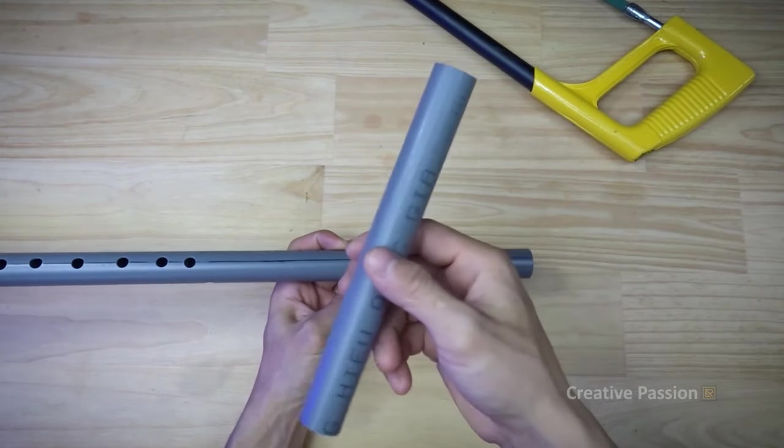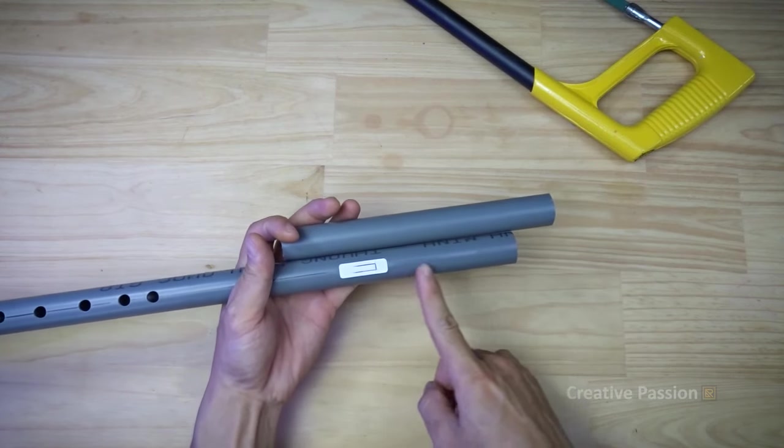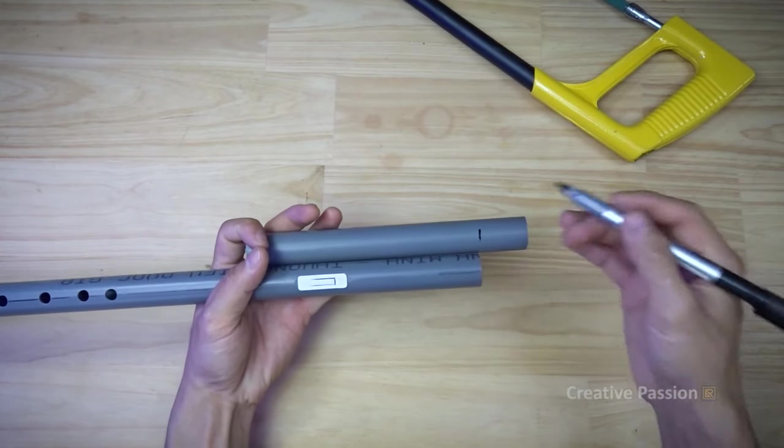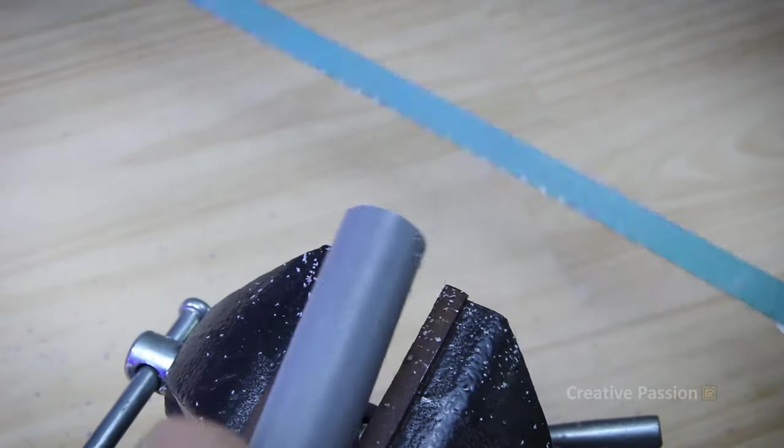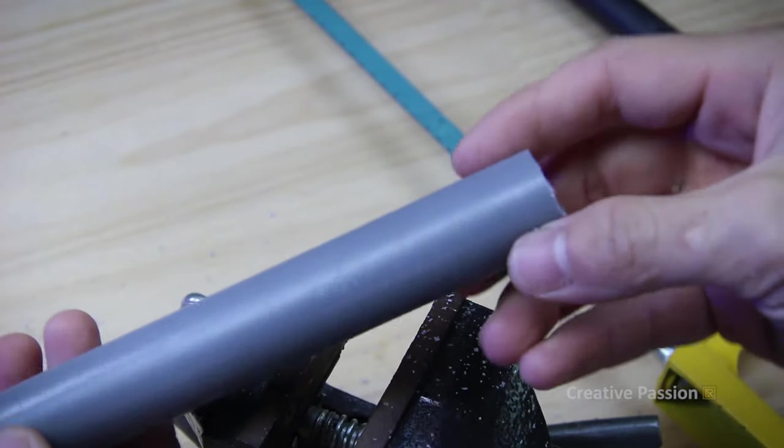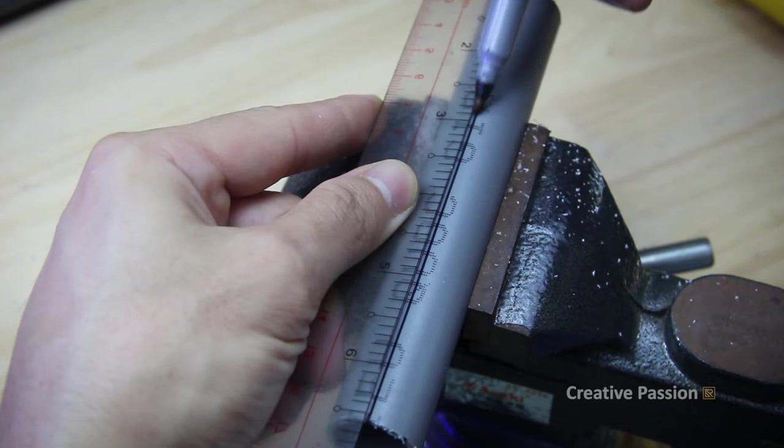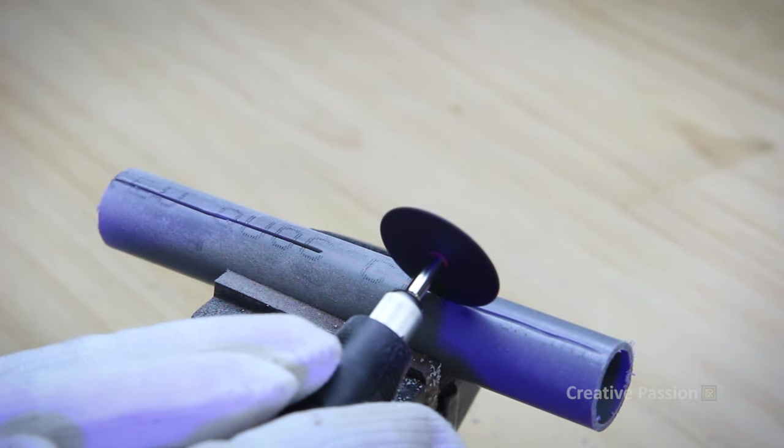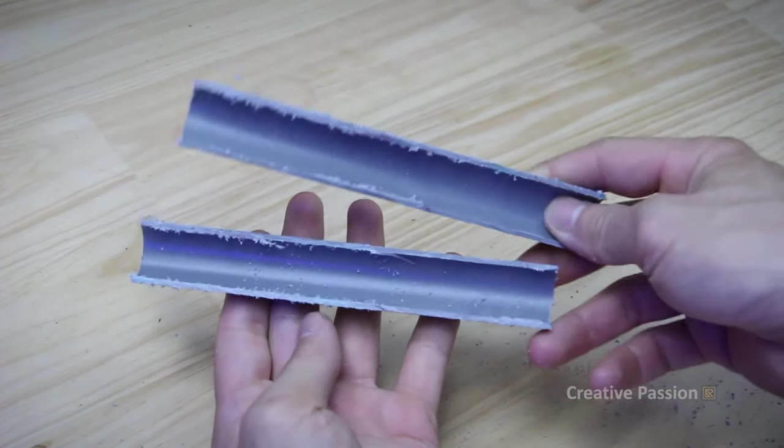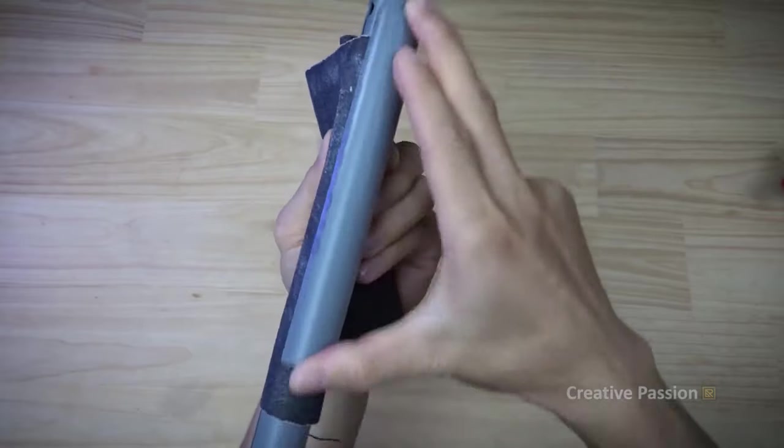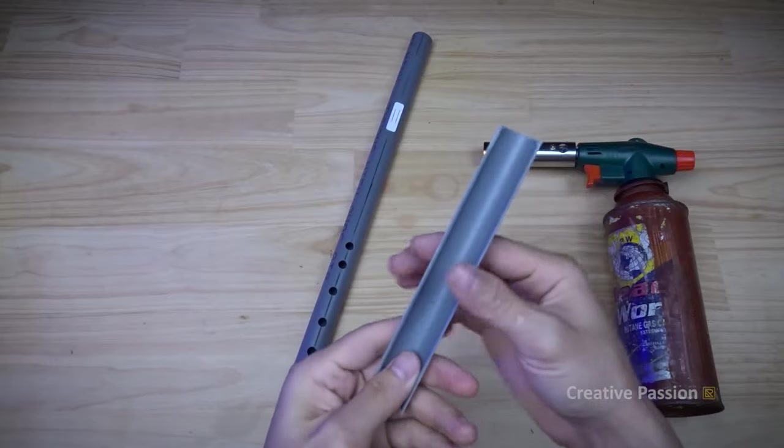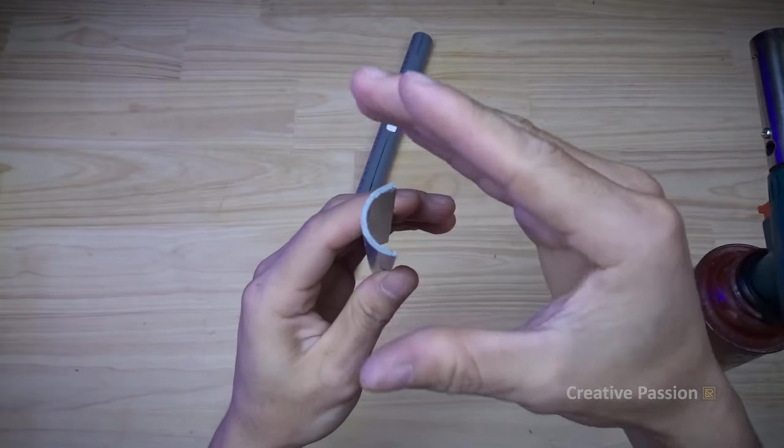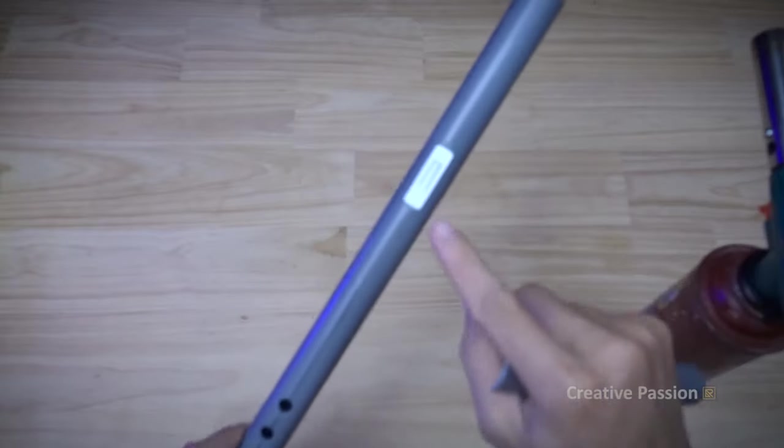Next step, we will make the cap. Here I will use this 21mm bottle cap. Our cap will be about this long. And a straight line like this. Then we will divide this bottle cap into 1/2 lengthwise.